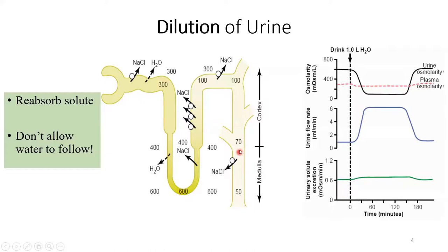Overall, in this over-hydration scenario, the nephron is not really struggling. It doesn't need to do much — it just does what it does naturally. Each segment does its job, the thick ascending limb and collecting duct are the main characters, and nothing spectacular is happening. It's simple diuresis — you let go of the water. So the answer to the question from the previous lecture is: dilution of urine is not the challenging scenario; it's actually concentration of urine.